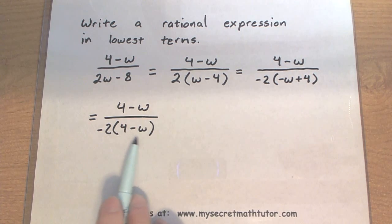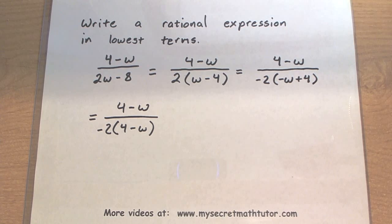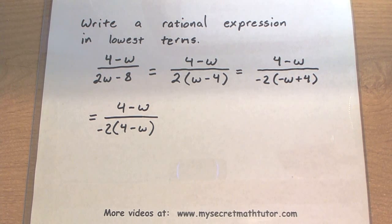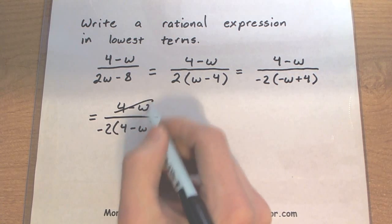So I put the negative w second and the positive 4 first. Now you can see that the piece in the top and the piece in the bottom, those factors are exactly the same. So let's go ahead and cancel them out.